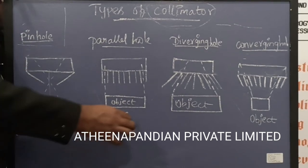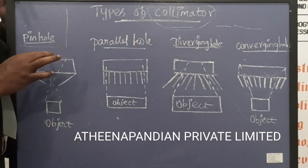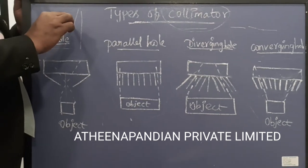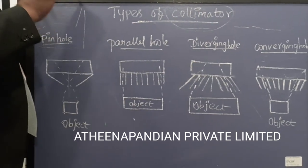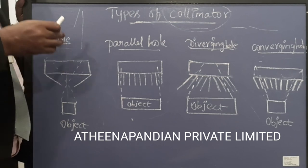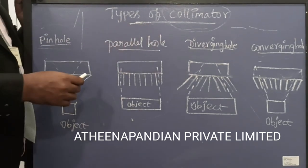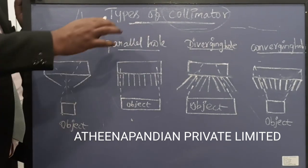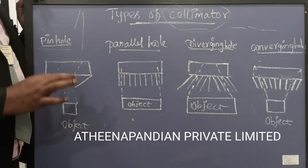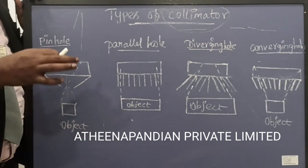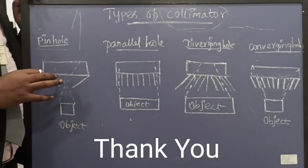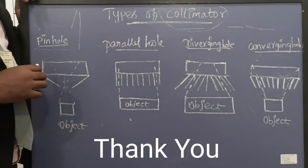This is what the types of collimator are. Inside the collimator, a mirror is placed. The mirror helps in activating all the collimator types in a perfect manner. This is what I needed to explain about the collimator. In the next video, we will go for the next part of the X-ray machine. Thank you very much.